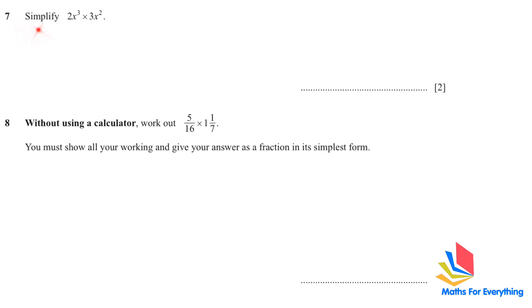Question 7: simplify. We multiply the numbers — 3 and 6 — and use the indices rule that when we multiply with the same base we add the powers. We have x to the power of 3 and x to the power of 2, so 3 plus 2 equals 5.